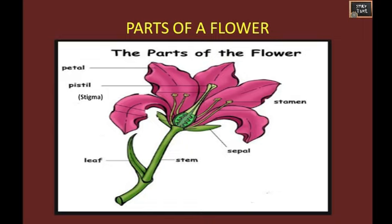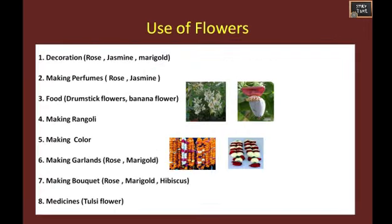Outside the pistil is the stamen. Then you can see the sepal, stem and leaf attached to it. These are the parts of a flower. There are also many uses for flowers — you can use them for decoration, making perfumes, food, making rangoli, making color, making garlands, making bouquets, and medicines. We will discuss all these uses in detail in this chapter.